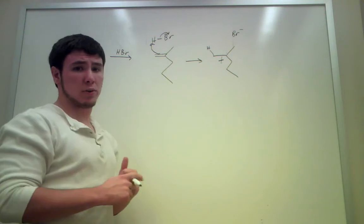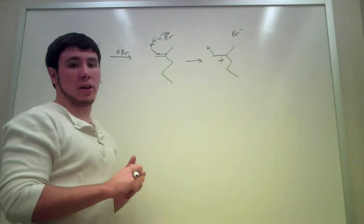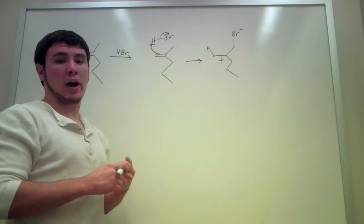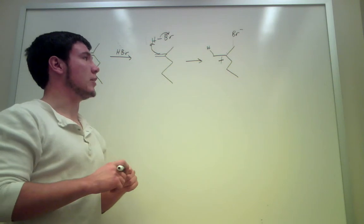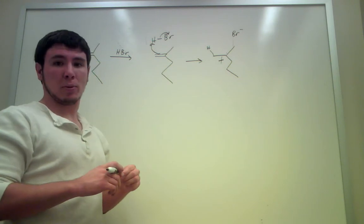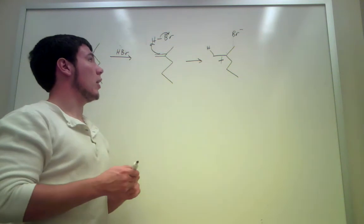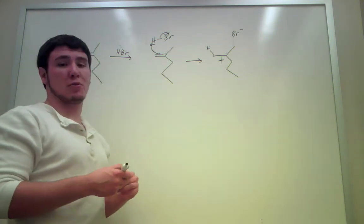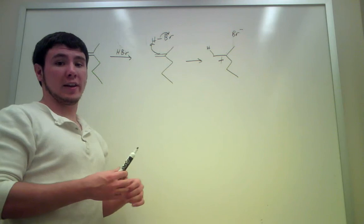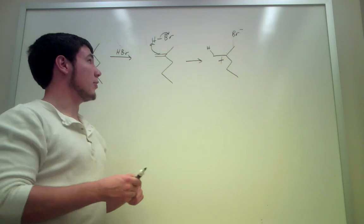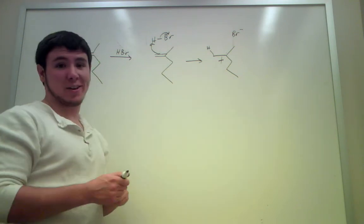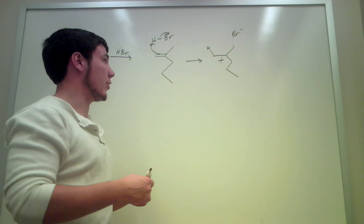This is what's called Markovnikov's rule. And it says that when a hydrogen bonds to an alkene, you will see that the hydrogen bonds to the carbon that already has the most hydrogens. I had one chem professor say it this way: the one that gots, gets. So this one has gots lots of hydrogens, so it gets the other hydrogen.